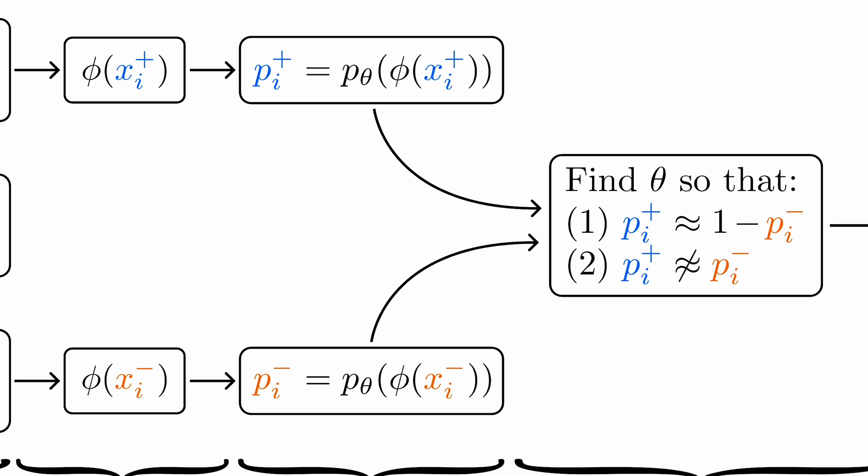This is wonderful and elegant, but the eagle-eyed among you may have noticed a trivial solution. The p theta probe could just map everything to 0.5. That would always satisfy objective 1 here. So we also have to gently persuade it to assign different probabilities to the versions of the same question that end in yes and no.